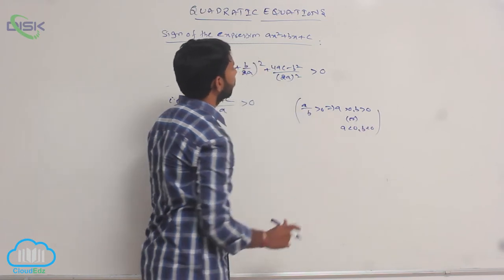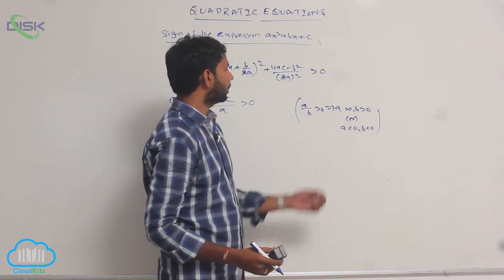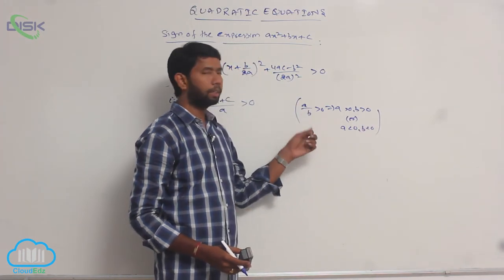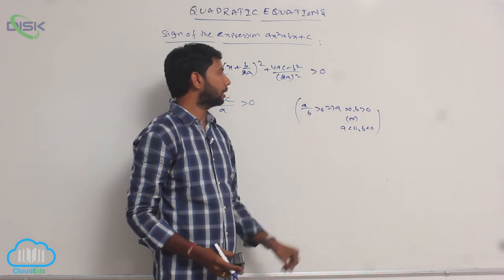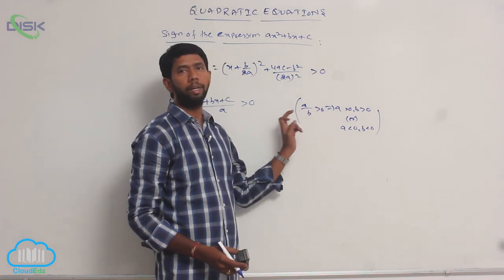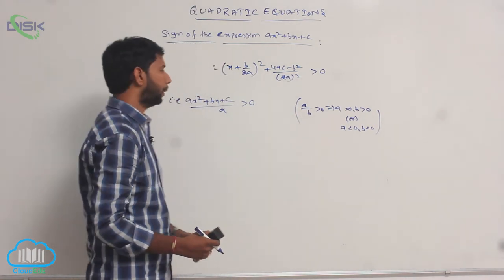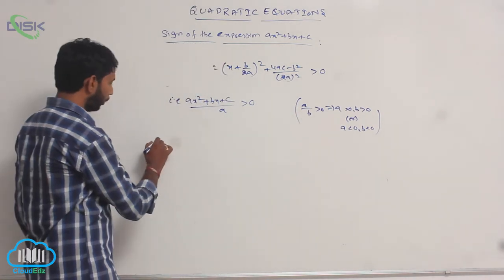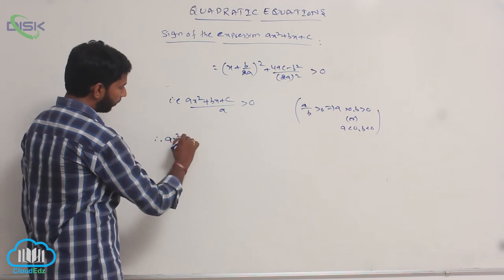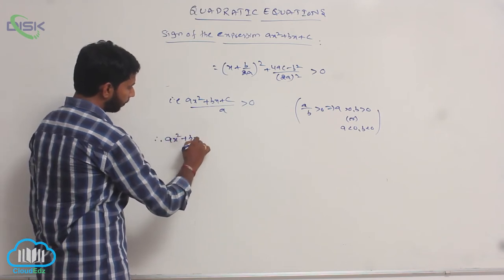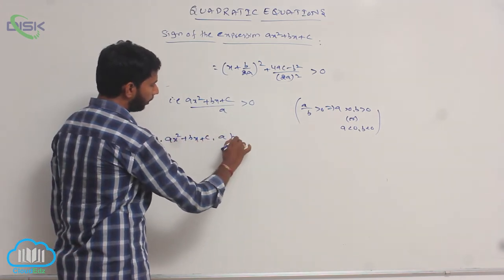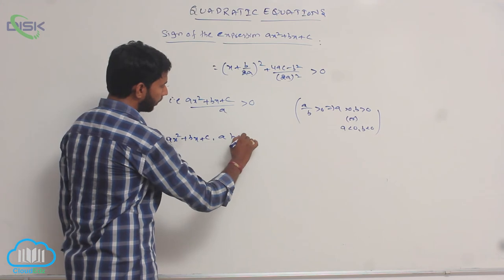A < 0 and B < 0 means A and B have the same sign — that is, A and B are both positive or A and B are both negative. Therefore, ax² + bx + c and a have the same sign.